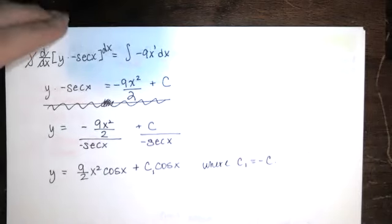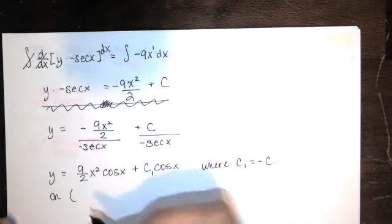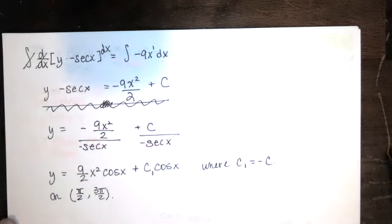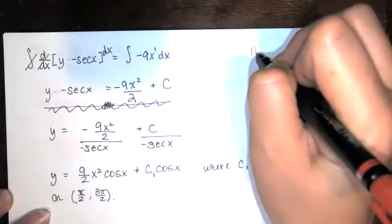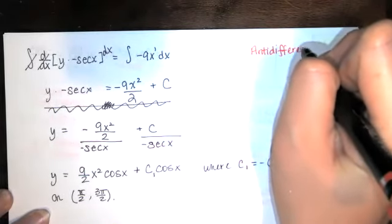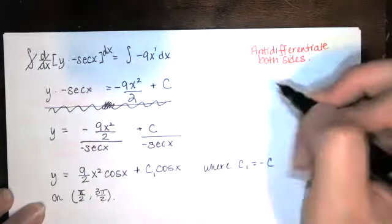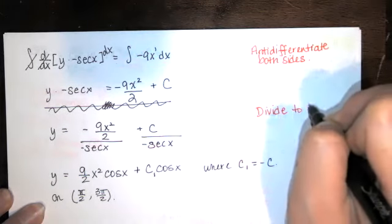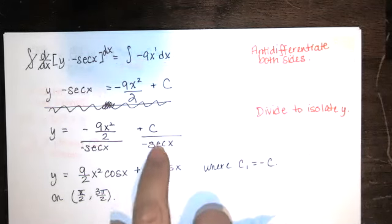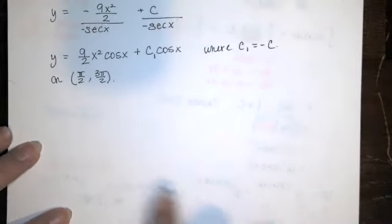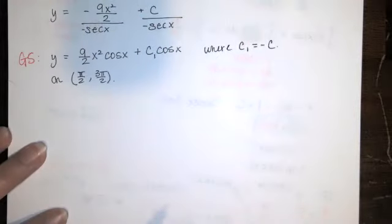That is the general solution of our differential equation, valid wherever cosine is nonzero. The interval we're interested in — containing 2π/3 — is (π/2, 3π/2). We recognized the left-hand side as the derivative of a product, antidifferentiated both sides, then divided to isolate y, being careful to divide the constant c by the integrating factor as well.